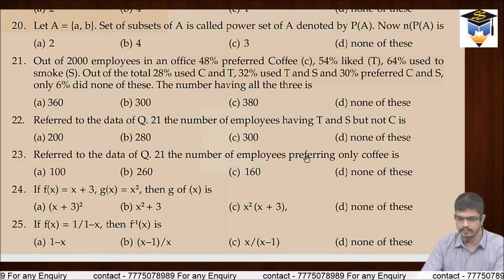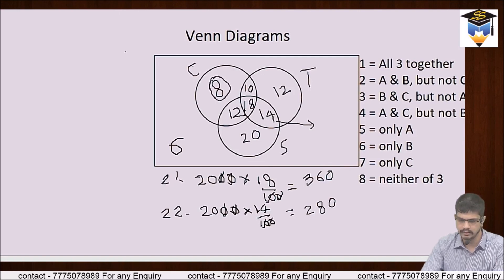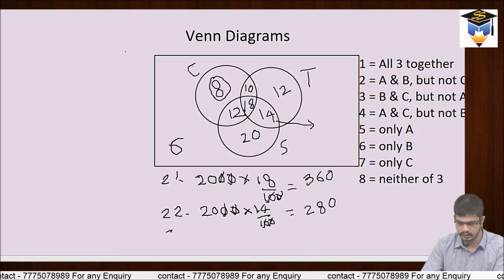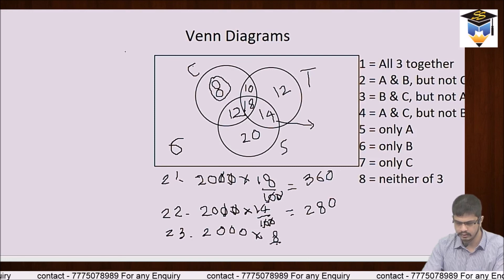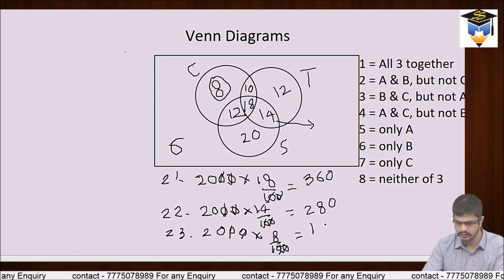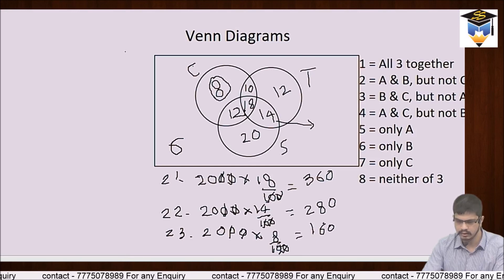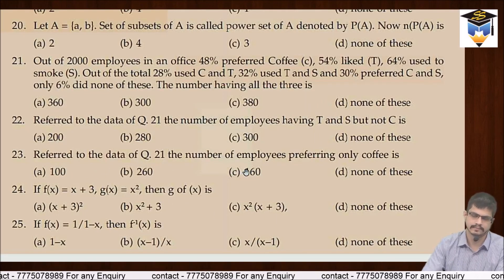Question 23: the number of employees preferring only coffee. Only coffee waale hume pata hai — 8%. 2000 × 8/100 = 8 × 20 = 160. Option C, 160, is your correct answer.